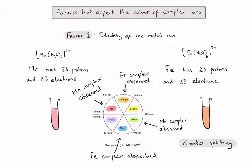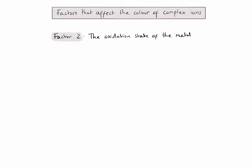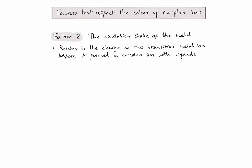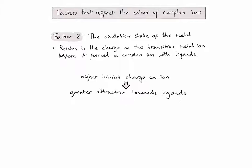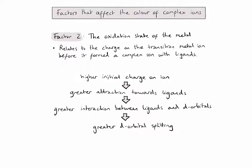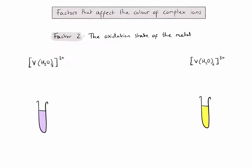Let's now consider the second factor: the oxidation state of the metal. By oxidation state, we're really talking about the charge on the transition metal ion before it formed a complex ion with ligands. If I had a higher initial charge on the metal ion, we would expect to see a greater attraction towards ligands in the solution, and therefore a greater interaction between ligands and the d-orbitals, leading to greater d-orbital splitting. Here are two complex ions that are almost identical, except the one on the left has two positive charges and the one on the right has three positive charges. In both cases, the charge on the complex ion is very similar to the oxidation state of the metal, and you can see that this impacts the colour of the solutions.